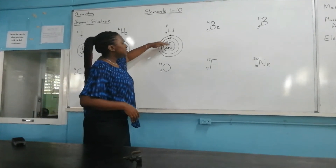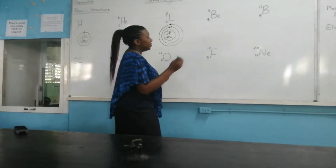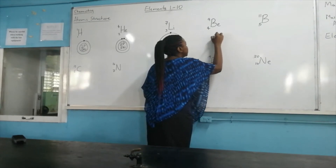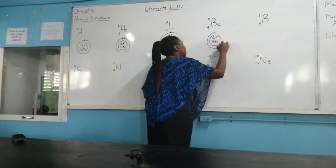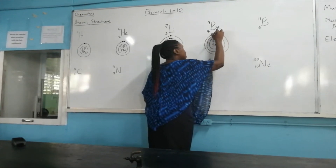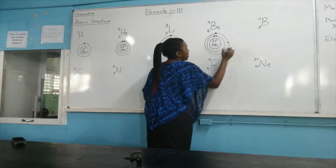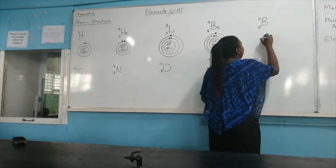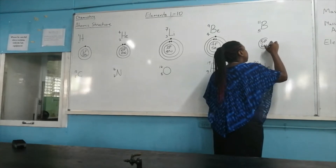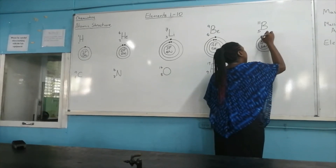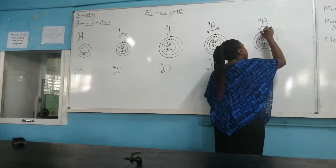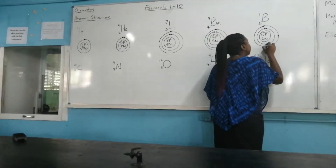For beryllium, we have four protons and five neutrons. The first shell has two electrons, and the second shell also has two electrons. For boron, the second shell has three electrons.